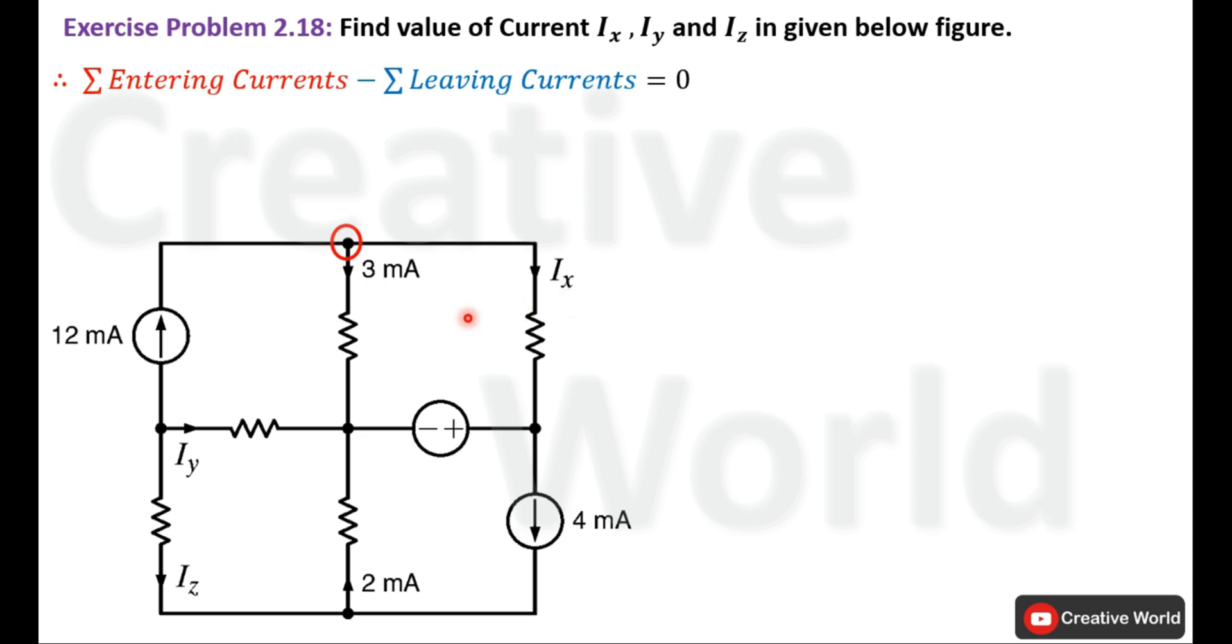So write the Kirchhoff's Current Law equation for this particular node. 12 mA is the entering current, while minus 3 mA and minus Ix are leaving currents from this node. Subtract 3 mA from 12 mA and place Ix on the other hand side of the equal sign to make it positive. The value of Ix is 9 mA.